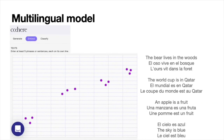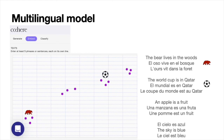We can do even better. The previous embeddings I showed you were for the English language, but Cohere actually has a multilingual embedding that handles more than a hundred languages. For example, the first three sentences are about birds that live in the woods, and they're in three different languages — yet the embedding puts them in similar places. The same thing happens with soccer-related sentences, fruit-related sentences, and sky-related sentences. This is a tremendous embedding that is language-agnostic and very, very useful.